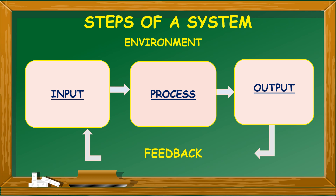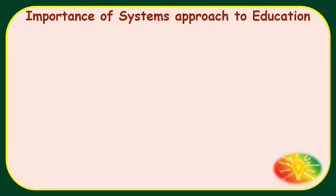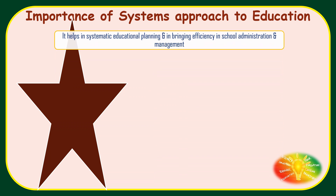Now let us proceed to the importance of systems approach in education. The very first point — it helps in systematic educational planning and in bringing efficiency in school administration as well as management. Toh systems approach kya karta hai — complete framework provide karta hai to the education institution ki kis tarah se plan kiya jaaye, proper decision kaise liya jaaye, control kaise kiya jaaye, aur koi bhi particular problem aagi administration mein management mein, effective functioning of the school mein, toh use immediately effectively resolve kiya jaaye.